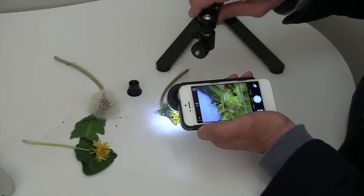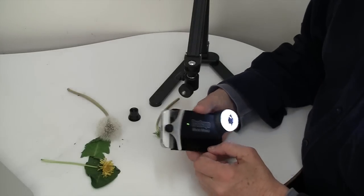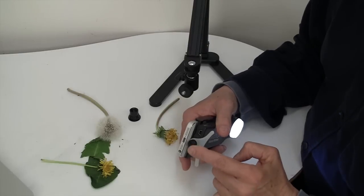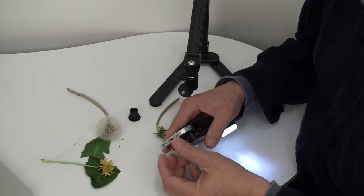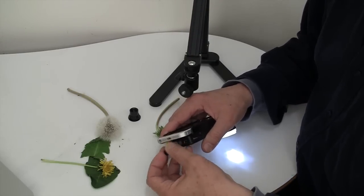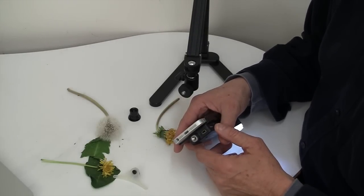On the back end of the ProScope Micromobile is our little stand. If I unscrew this nut right here, I reveal that there is a quarter-twenty tripod mount. That's perfect for any stand.